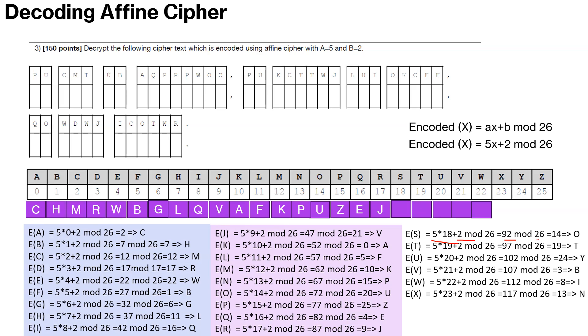Just go on. For S, we go on. 5 times 18 is 90, 90 plus 2, 92 mod 26 is 14. 92 minus 78 is 14. So you keep going ahead and you go to almost all the letters.